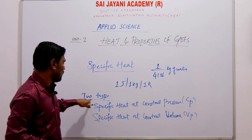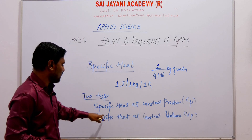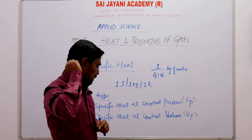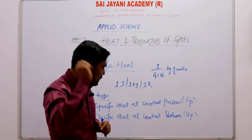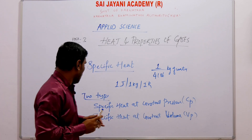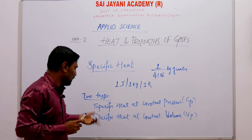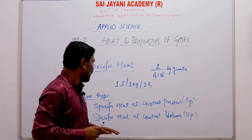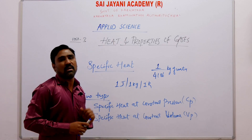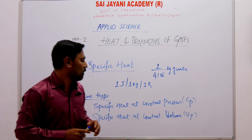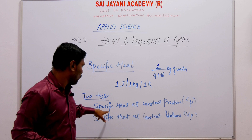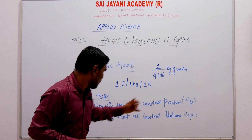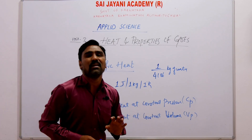There are two types of specific heat: specific heat at constant pressure, and specific heat at constant volume. We will discuss these in detail in the next topic.